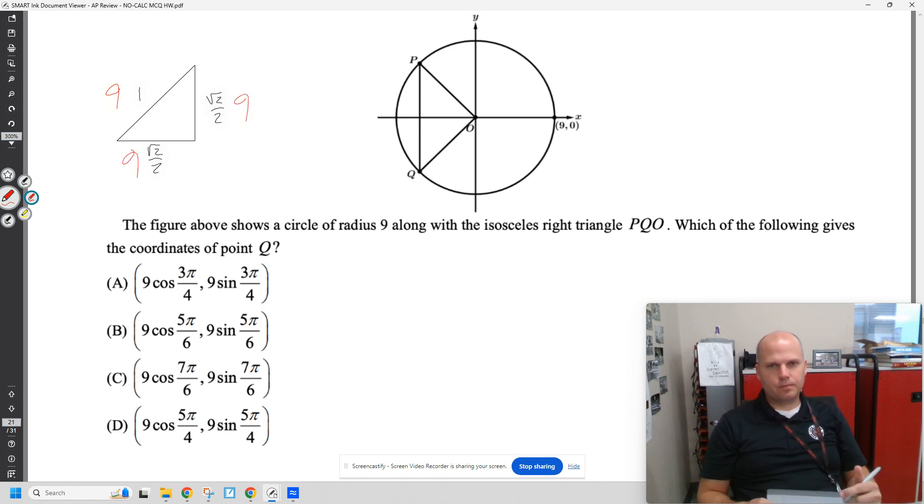Now if I wanted to find coordinates of point Q, if this is an isosceles triangle, this side length and this side length are the same, which means this side length is going to be the same, which means this is going to be half of it. This is a little bit deceiving because it doesn't have to be the same.